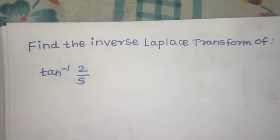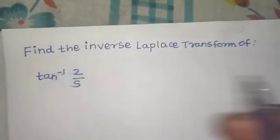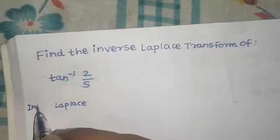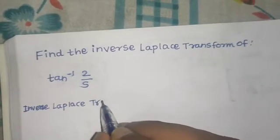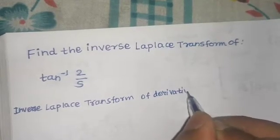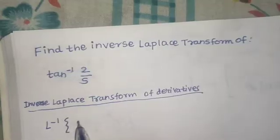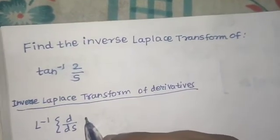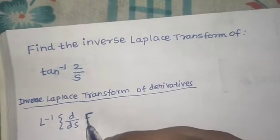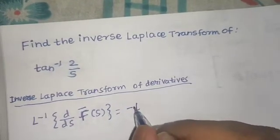So we will have to go for a rule — which rule exactly? There is a rule for inverse Laplace transform of derivatives, which says that if we have to find the Laplace inverse of d by ds of f bar s, that can be given by minus of t into the Laplace inverse of that function.